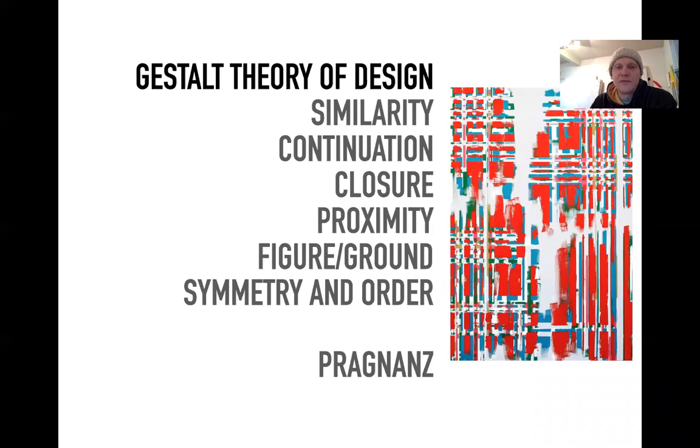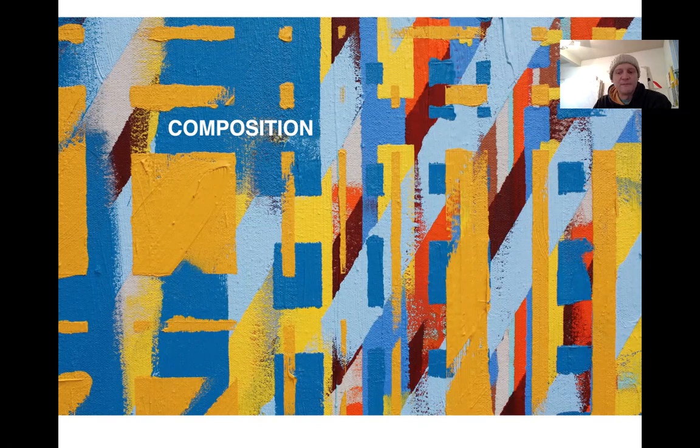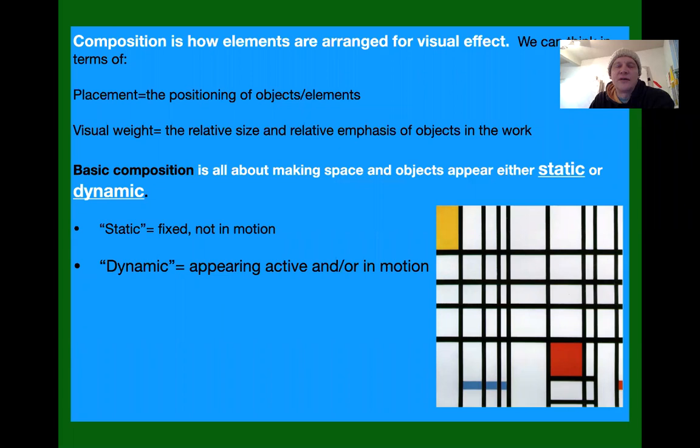This all rolls into composition. Composition is how elements are arranged for visual effect. We can think of this in terms of the placement of things — the positioning of objects — and the visual weight of things: the relative size and emphasis of objects in a work. It's all about whether the space and the objects feel static or dynamic. Static means fixed and not in motion; dynamic means to appear active or in motion.